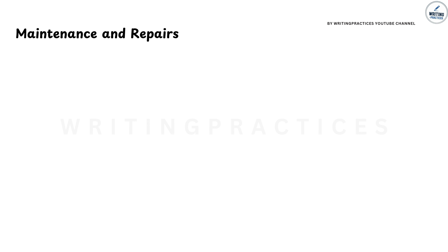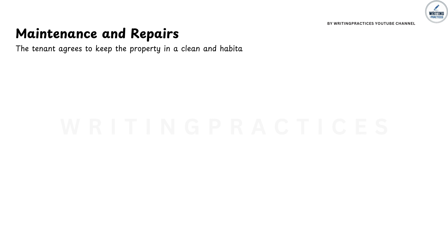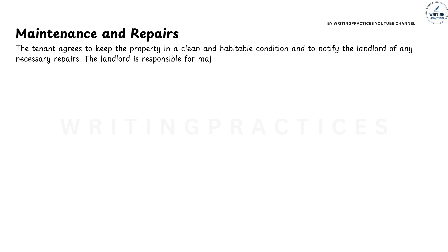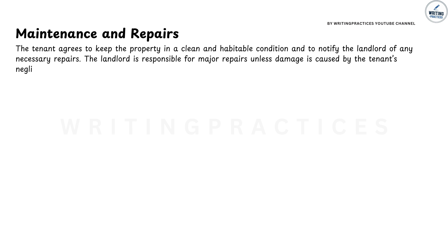Step 7: Addressing maintenance and repairs. This section outlines who's responsible for keeping the property in good condition. Generally, tenants are responsible for day-to-day upkeep, such as cleaning and minor fixes, while the landlord is responsible for major repairs, unless the tenant caused the damage. Here you can also mention that the tenant should report any necessary repairs to the landlord promptly. This ensures that any issues are dealt with quickly and keeps the property in good shape.